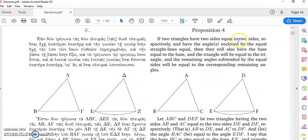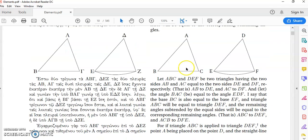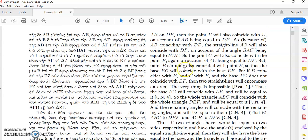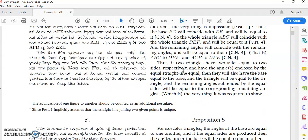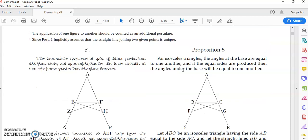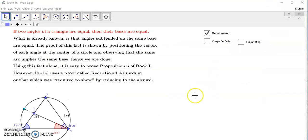Proposition 4 says that if two triangles have two sides equal to two sides, respectively, as you see in this diagram here, and have the angles enclosed by equal straight lines, then they will have the same base equal to the base. So in other words, this already tells you that a triangle with two equal angles will have two sides which are the same.